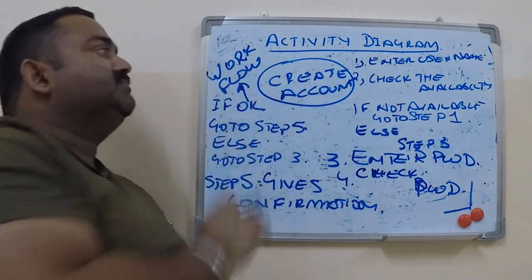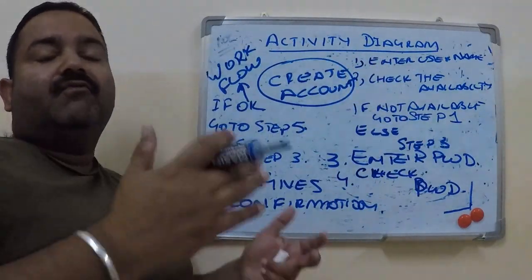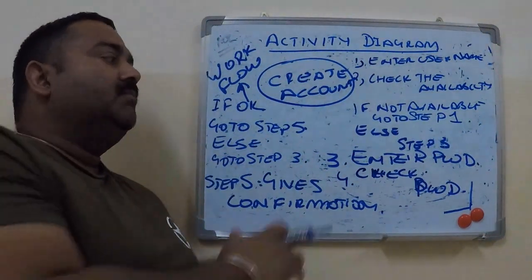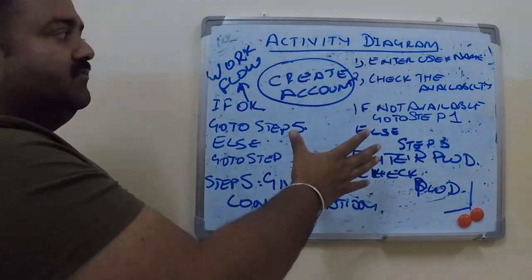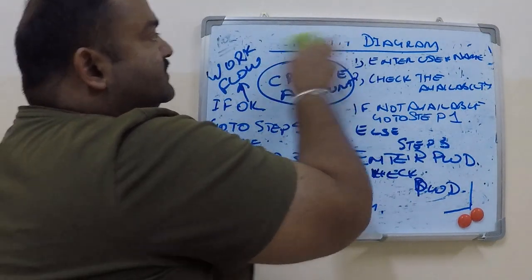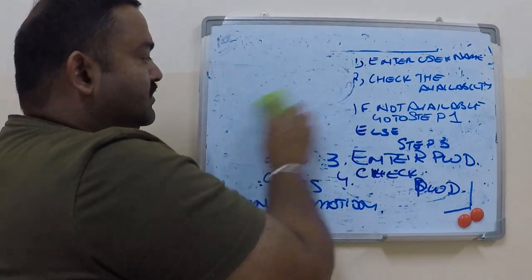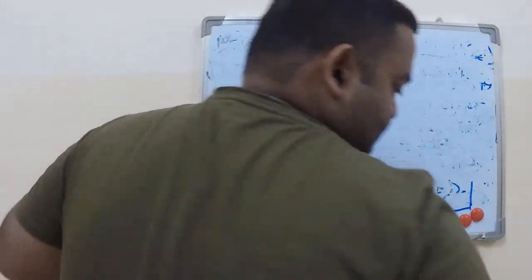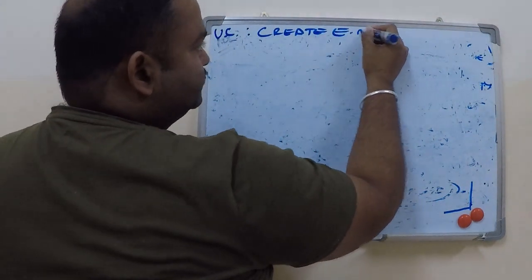An activity diagram is a graphical or pictorial representation of a workflow which we must perform in order to carry out our use case. Now from this workflow we are going to draw an activity diagram. The use case here is 'create email account'.